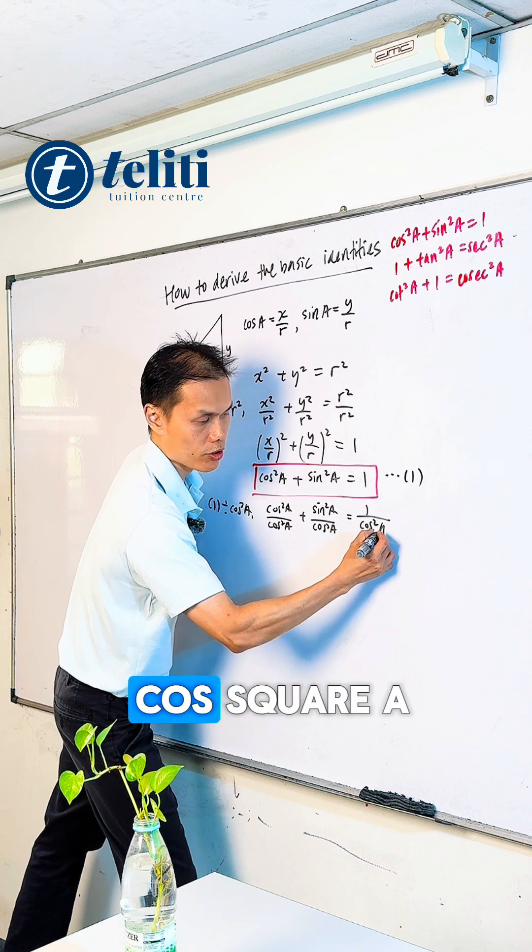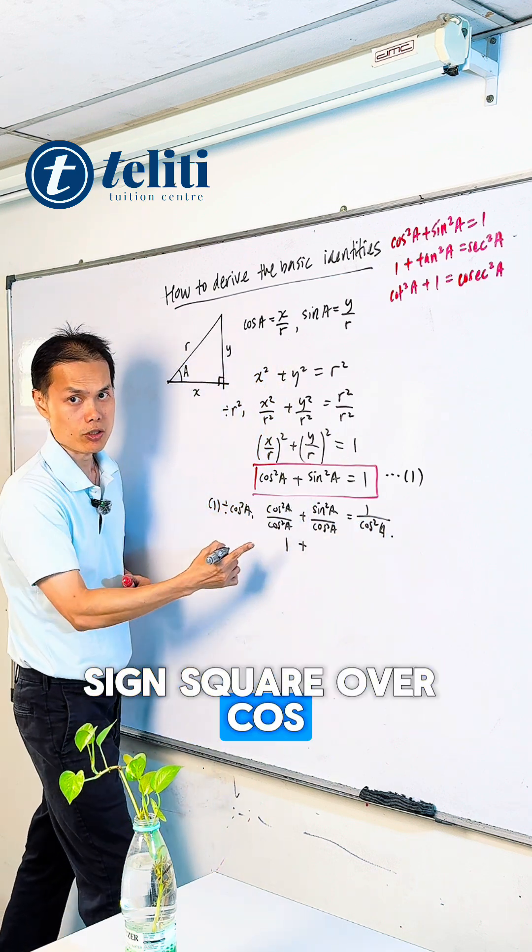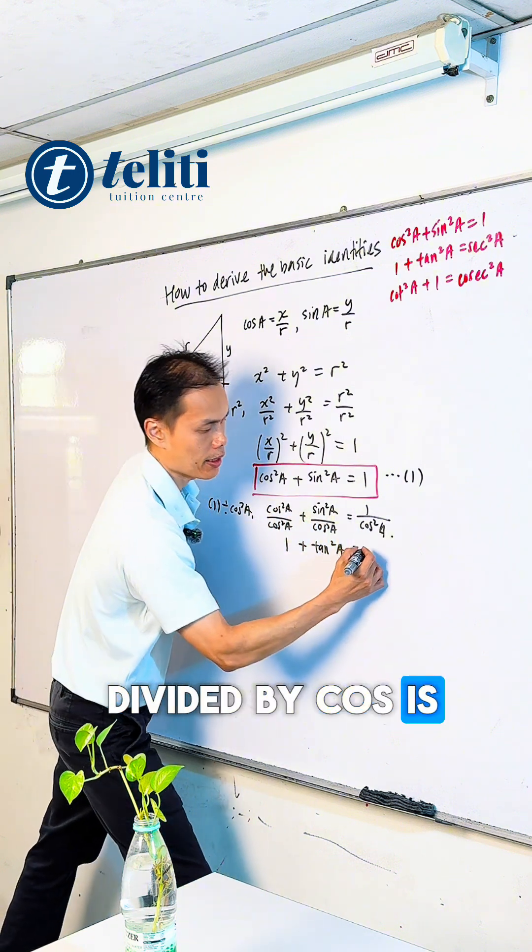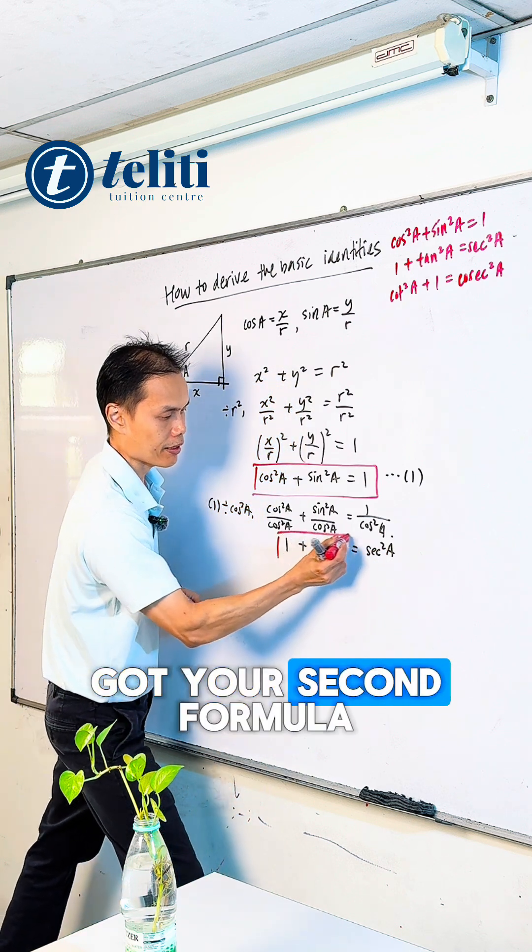Cos² over cos² is 1. Sin² over cos² is tan²A, and 1 divided by cos² is sec²A. There you go, you got your second formula for the basic identity: 1 + tan²A = sec²A.